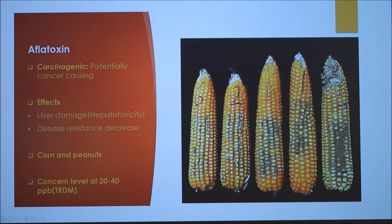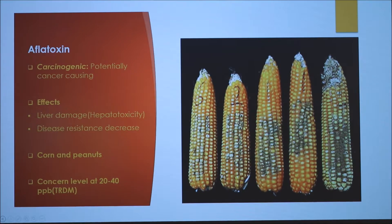The first mycotoxin I will be reviewing is aflatoxin. Aflatoxin is a carcinogen, which means it can potentially cause cancer. It is a hepatotoxin, which means it creates liver damage, and it also decreases disease resistance in our domestic species. It can affect corn and peanuts, although it affects peanuts the majority of the time. The concern level for aflatoxin is 20 to 40 parts per billion.